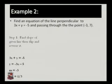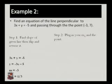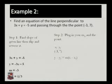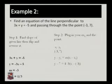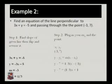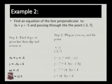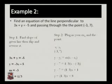Now we find the equation of the required line with slope 1/3 passing through (-3, 7). Here x1, y1 equals (-3, 7) and M equals 1/3. Using the point-slope form: y minus 7 equals (1/3)(x minus minus 3), which gives y minus 7 equals (1/3)(x plus 3). Since (1/3) times 3 equals 1, the final equation is y equals (1/3)x plus 8.